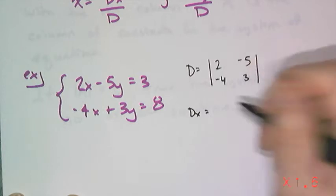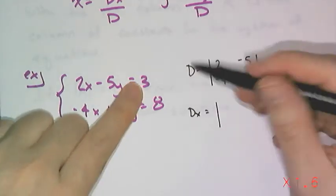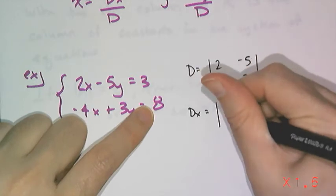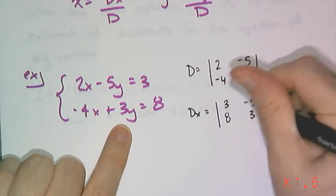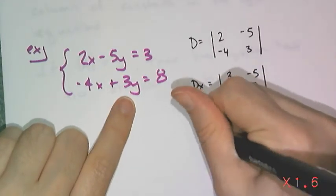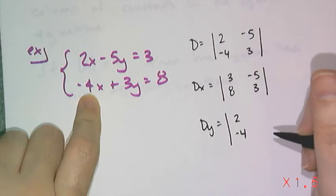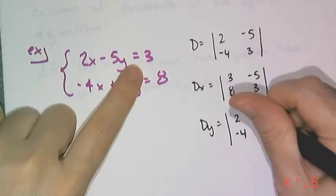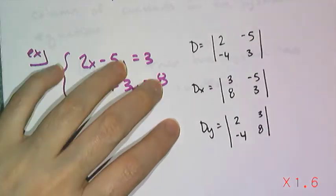D sub x is I'm going to replace the 2 and the negative 4 with a 3 and an 8, because I'm solving for x, and then I'm going to replace it with negative 5 and 3 as normal. And then d sub y, I want to keep the x coefficients, and this time replace the y coefficients with those 3 and 8s. And I'm just going to go ahead and find all these determinants with my calculator.